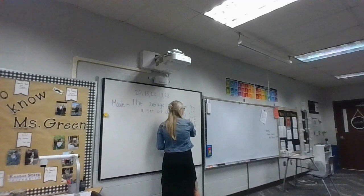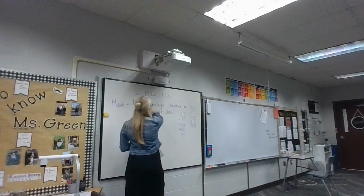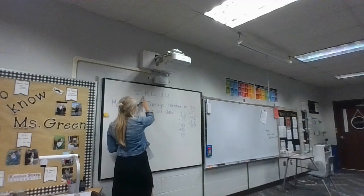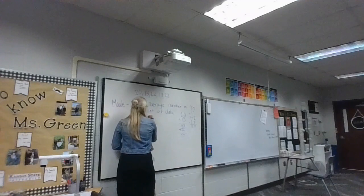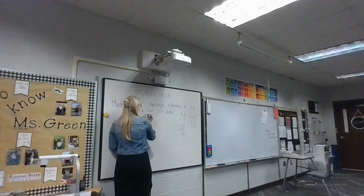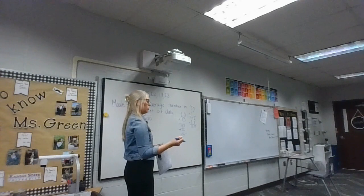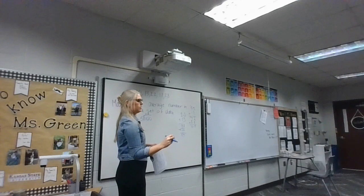Now we're going to do 100 divided by 5. Can 5 go into 1? No. Can 5 go into 10? Yes. How many times? 2. 2 times 5 is 10. I'm going to bring down that 0. If 5 goes into 0, how many times? 0. 0 times 5 is 0. Bring 0 down. So 5 goes into 100 — we get 20.